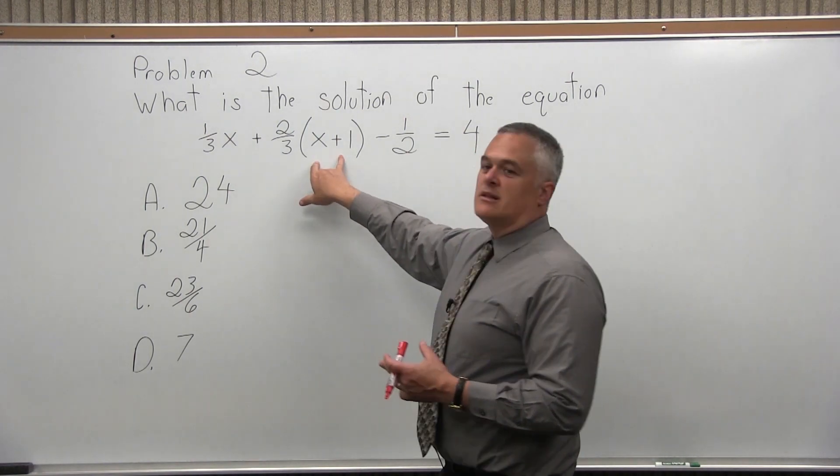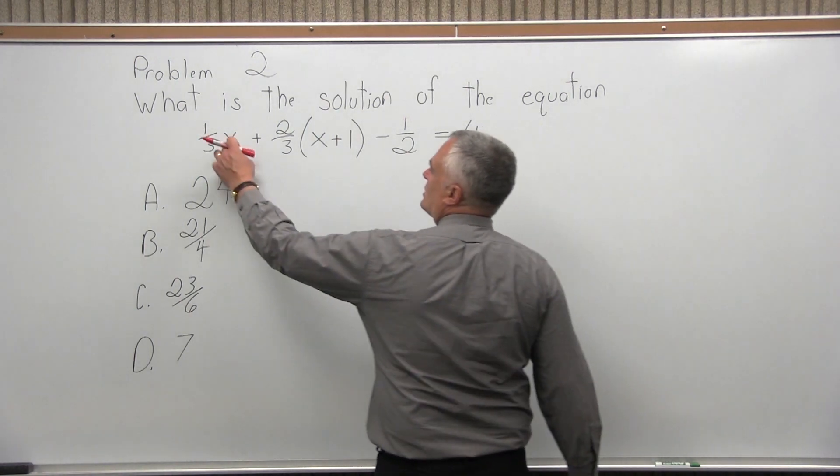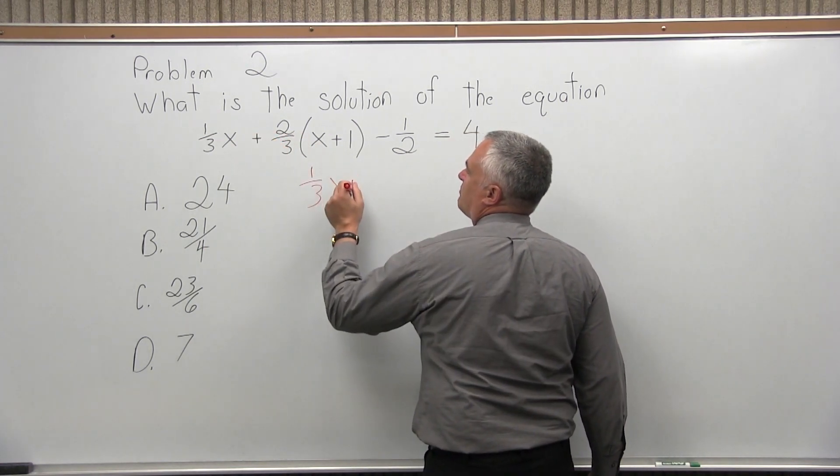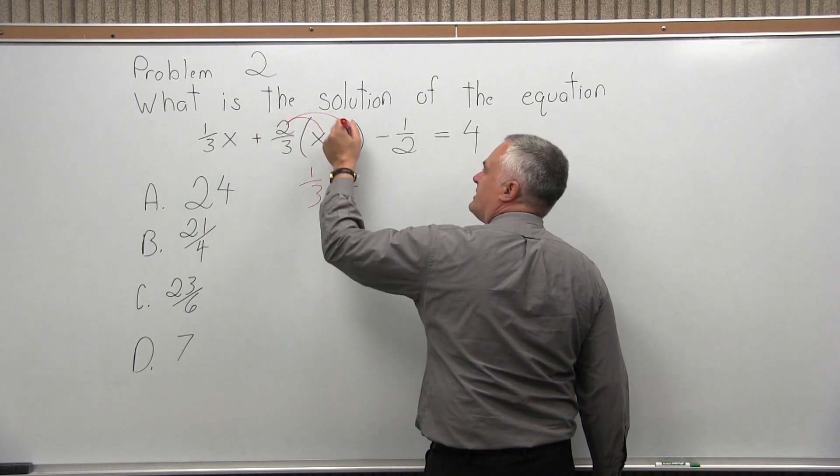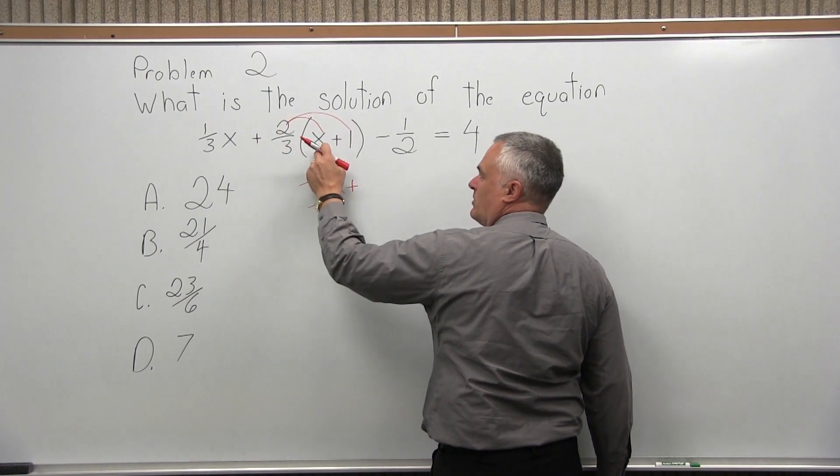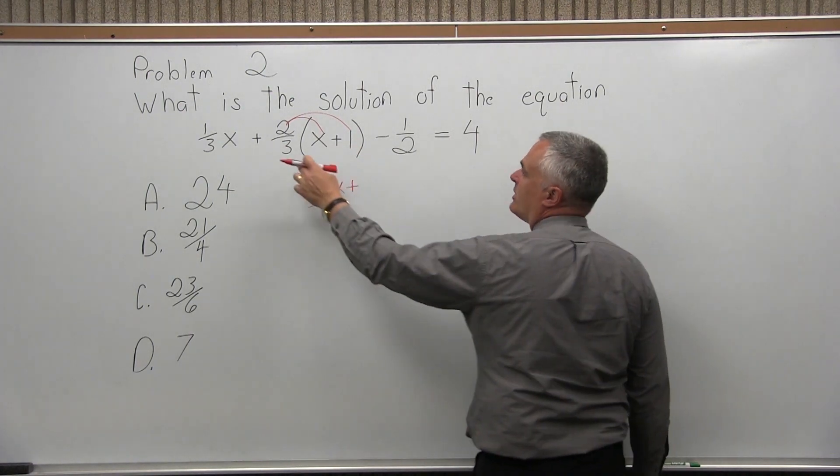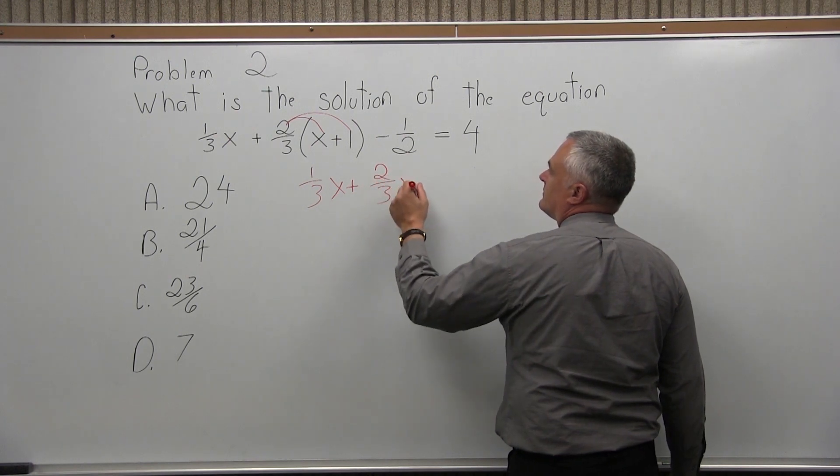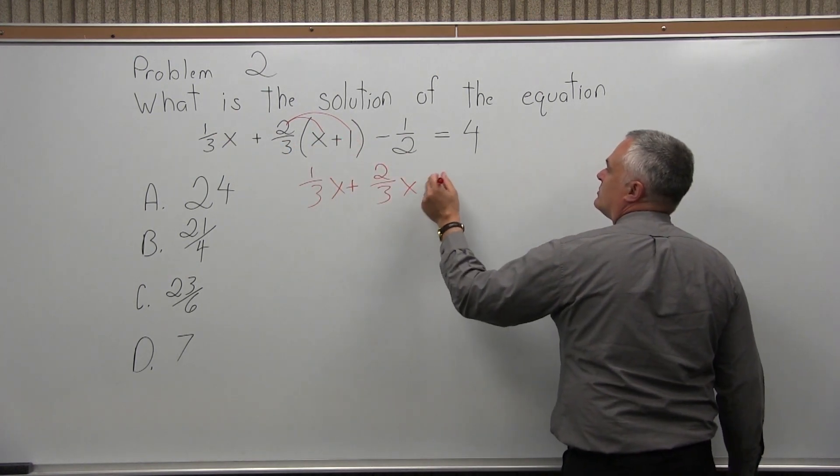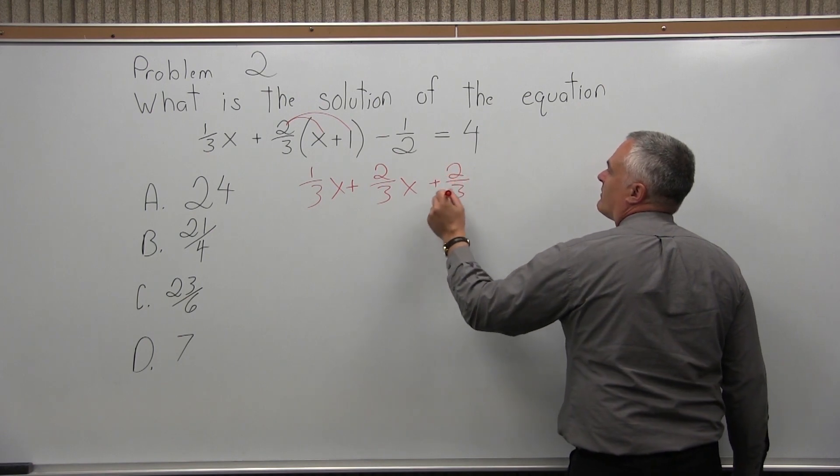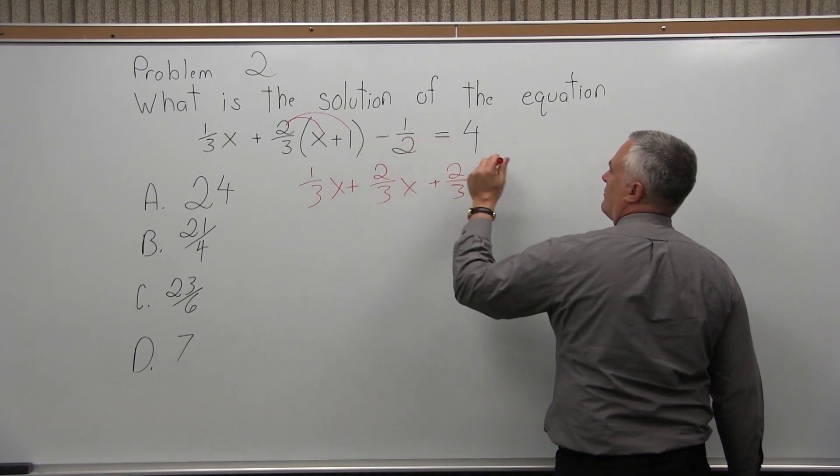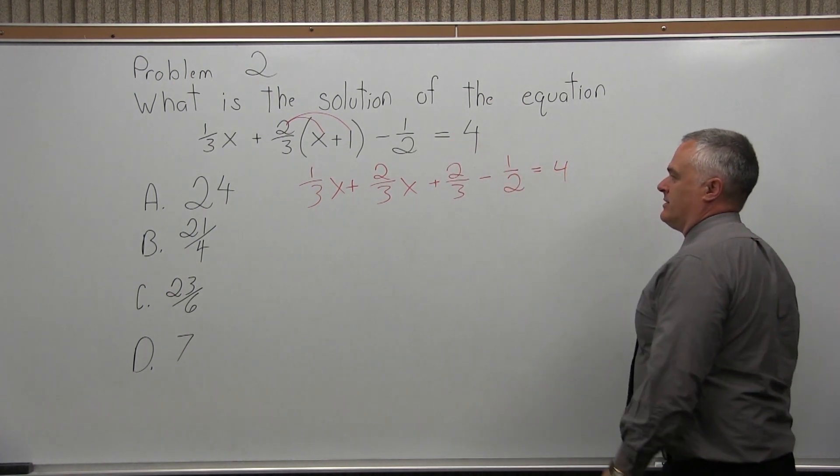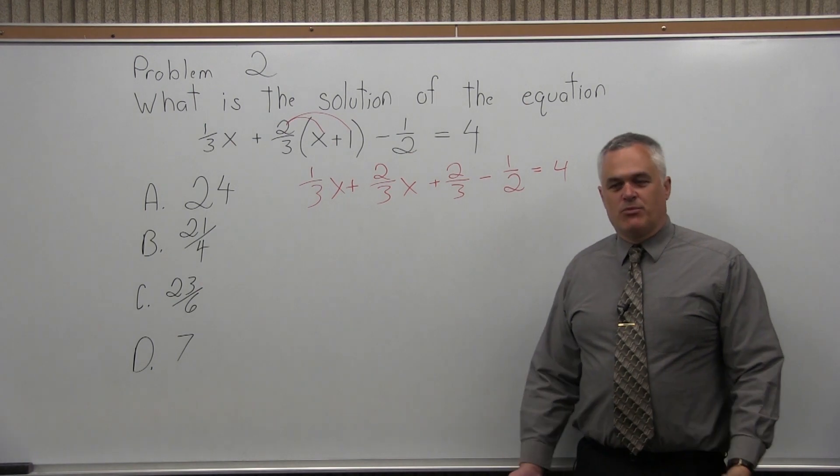The very first thing I want to do is clear my parentheses. This 1 third x can stay. The next is plus. To clear my parentheses, the number in front of the parentheses will be multiplied times each item in the parentheses. So, 2 thirds times x is 2 thirds x. And then, 2 thirds times 1. That's 2 thirds. And now, I've cleared the parentheses.